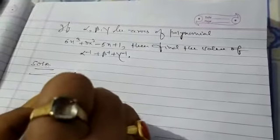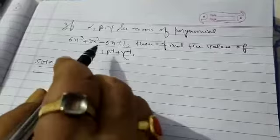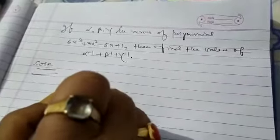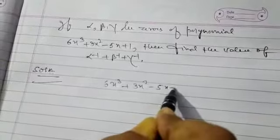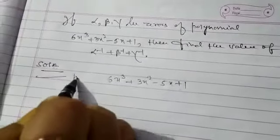Now, question is, how will you solve this type of problem? The given polynomial is a polynomial of three degrees, six x cube plus three x square minus five x plus one.